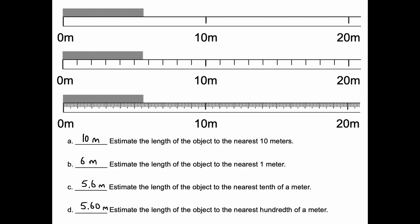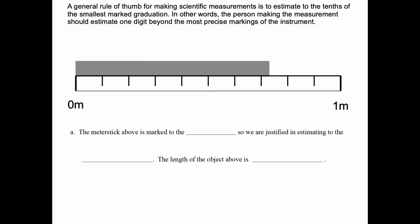But now, the question becomes, when it comes to scientific measurement, which answer is correct out of all these four? Since we have an instrument that's marked to the tenths place, it is generally accepted that you should estimate one digit beyond what the ruler is marked to. So, five point six zero is actually the best scientific answer to this question. A general rule of thumb for making scientific measurements is to estimate to the tenth of the smallest marked graduation. In other words, the person making the measurement should estimate one digit beyond the most precise markings on the instrument.